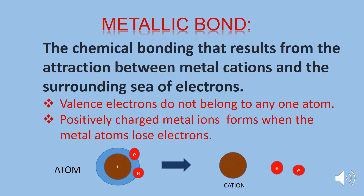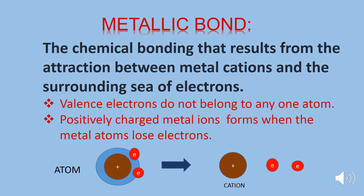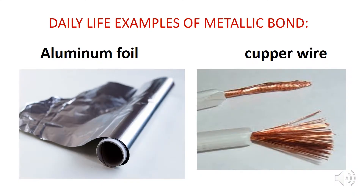The positively charged metal ions form when the metal atoms lose electrons. Let's take an example of the metallic bond from our daily life. Look at the aluminum foil and the copper wire — these are examples of the metallic bond from our daily life.